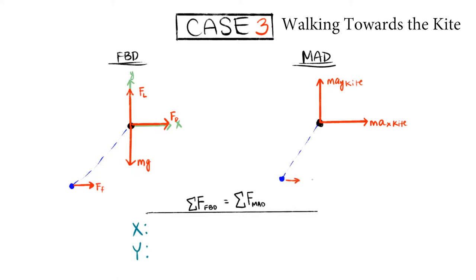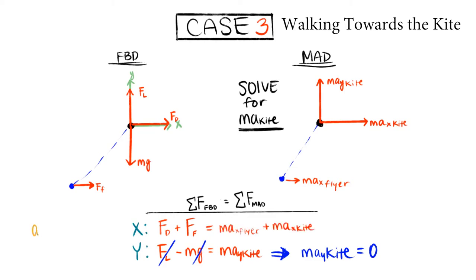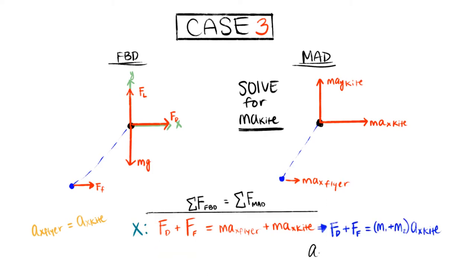The flyer is going to impart a force to the right, which is going to accelerate the flyer to the right, and we have to account for that acceleration and force in the mass acceleration of the kite. The mass acceleration for the kite in y is zero because it's not moving up and down. For the x direction: drag plus the force of the flyer equals the mass acceleration of the flyer plus the mass acceleration of the kite. Since the kite and flyer accelerate at the same rate, the acceleration in x equals the force of drag plus the force of the flyer divided by the sum of the two masses.